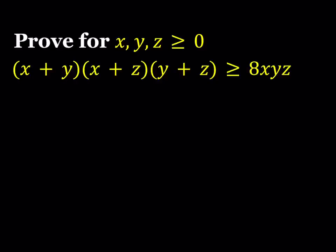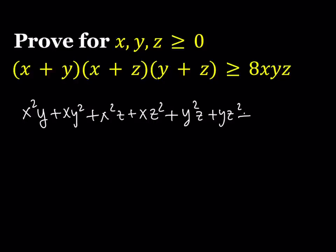So we can just go ahead and distribute the left hand side to see what's happening. This should give us x squared y plus xy squared plus x squared z plus xz squared when we multiply the whole thing, and then y squared z plus yz squared. And then we're also going to be getting xyz from here and that's going to come two times.